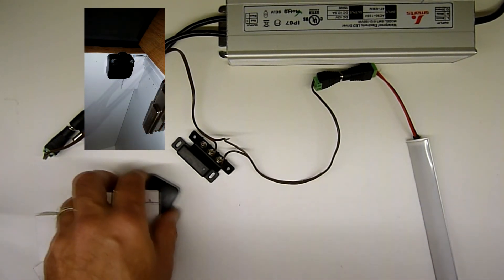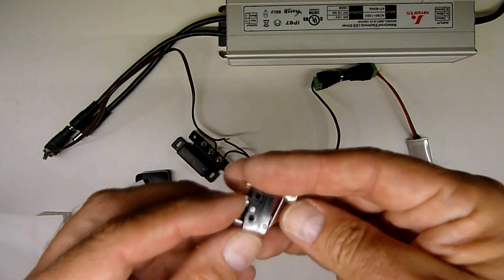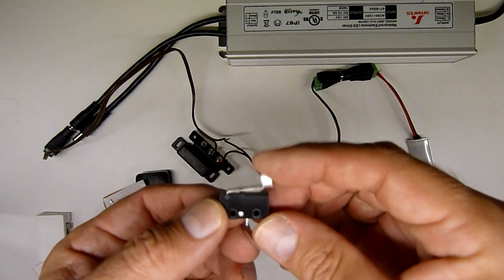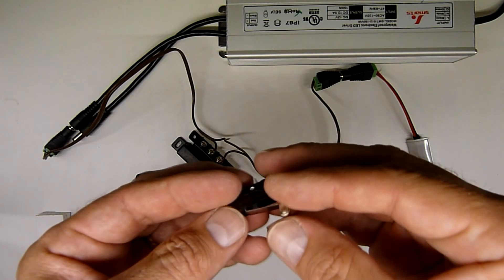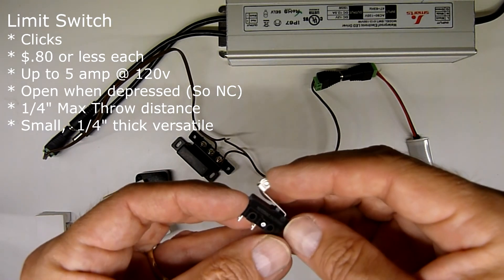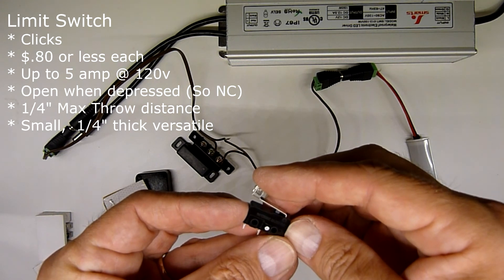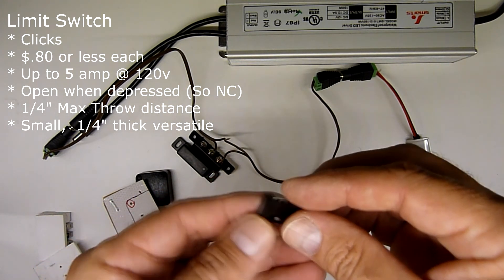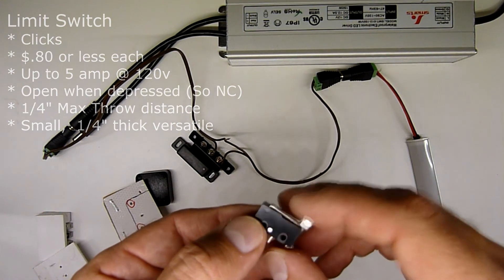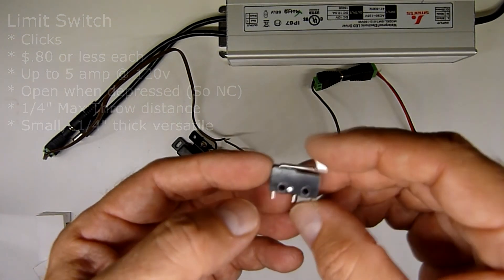The next one I'm going to show you is a limiter switch. Limiter switches are entirely and incredibly small. This is rated at 5 amps at 125 volts, 3 amps at 250 volts. You're using 12 volts DC so you're pretty much going to be able to power what you want with this.